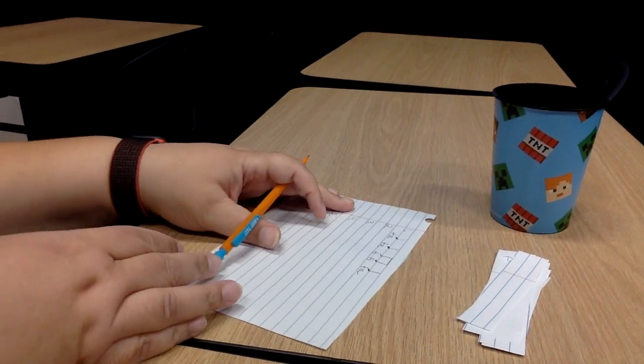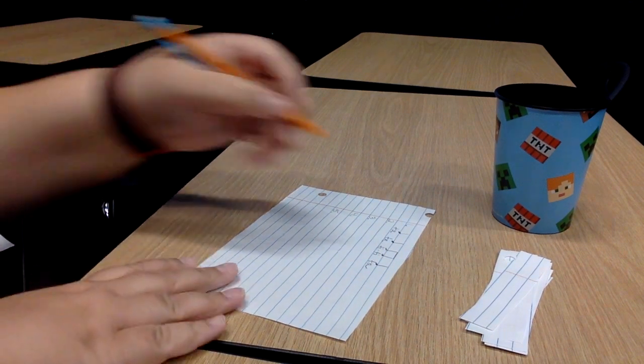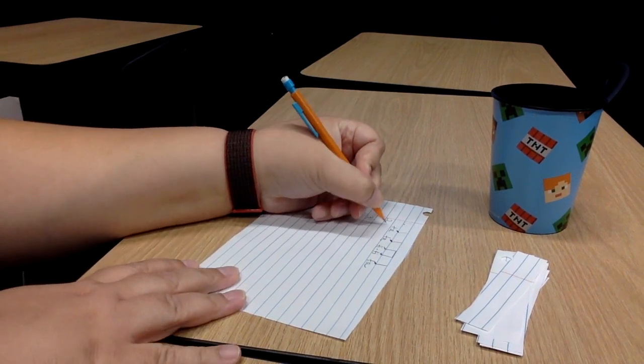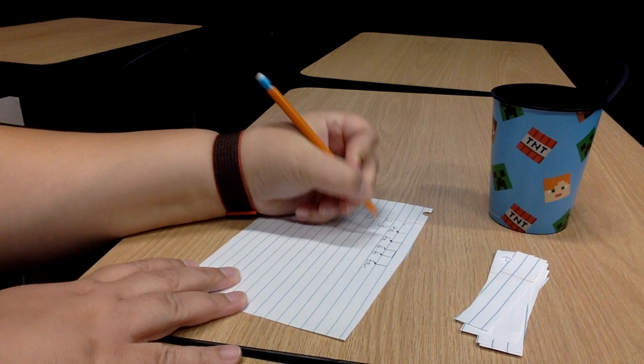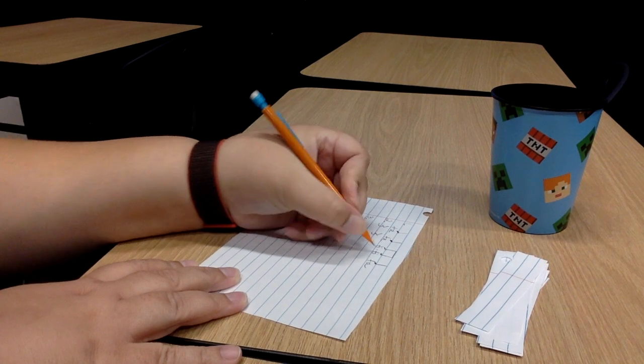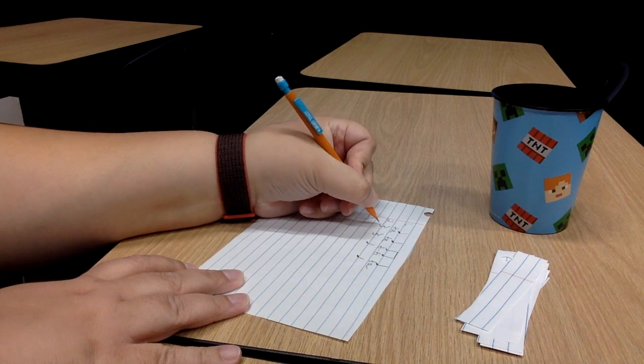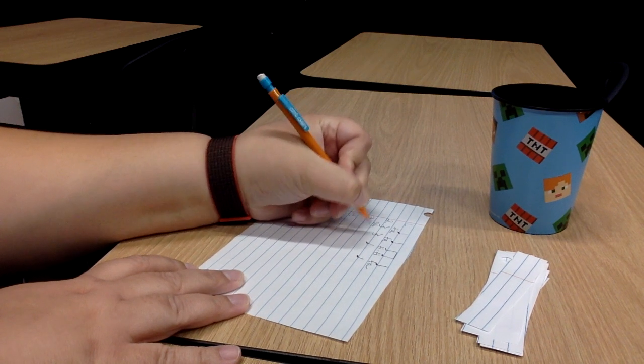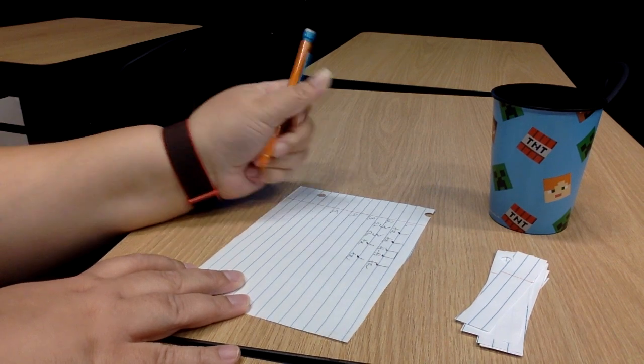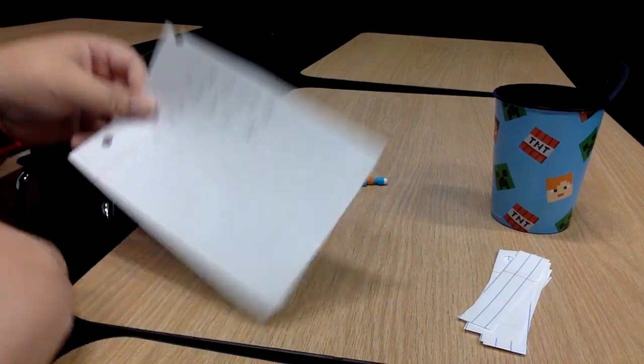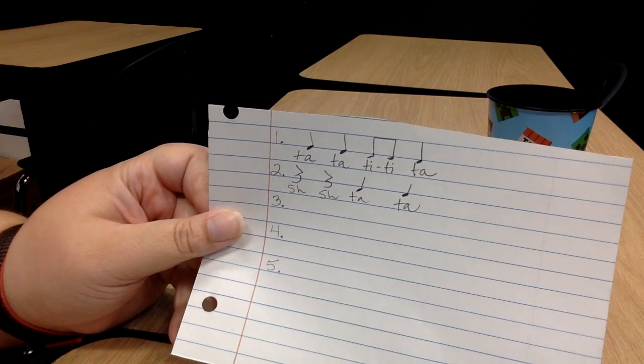Number two, let's do ta ta sh sh. Let's write it. Sh sh sh ta ta. Don't forget to write your words underneath. Make it look like mine: sh sh sh ta ta.